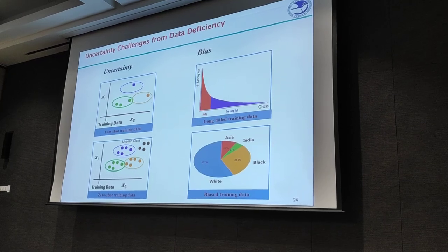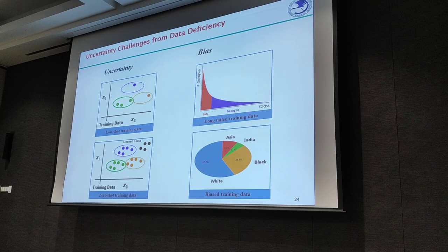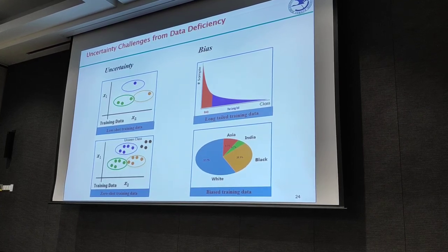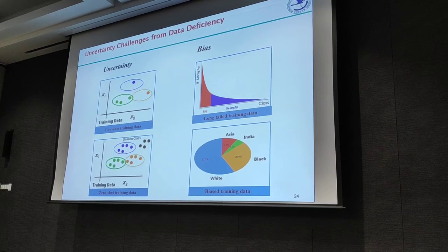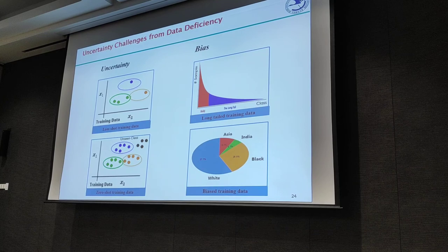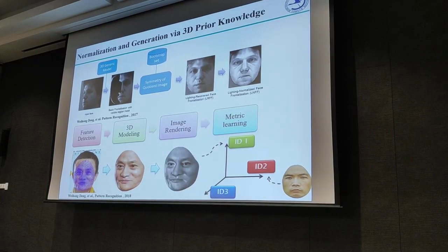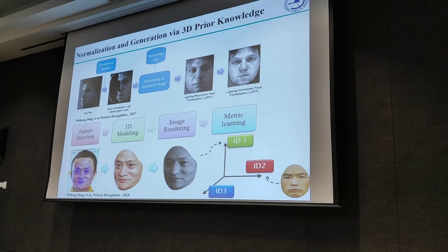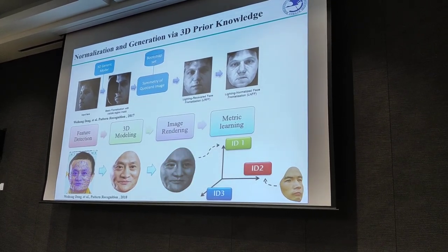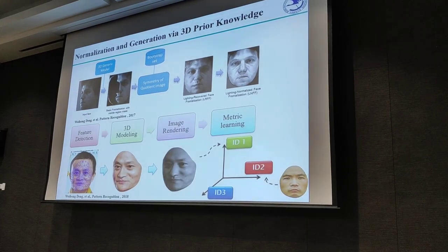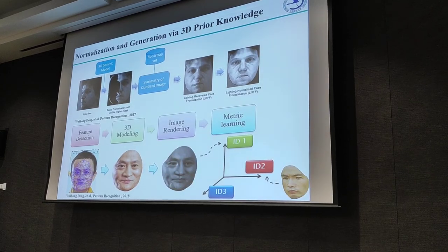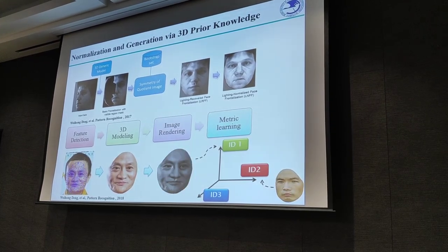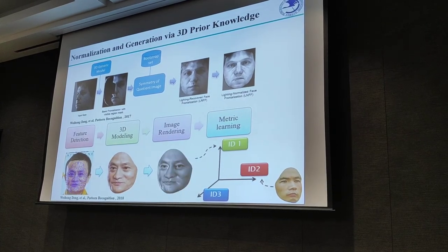In many facial recognition tasks, it is difficult to collect enough training images to model the uncertainty of faces needed by deep neural networks. So instead of focusing solely on learning from big data, my insight was to give the algorithm the ability to learn from low-shot, long-tailed, zero-shot, and biased training datasets. The most straightforward approach is to integrate prior knowledge, like a 3D shape model of the face, to generate virtual samples and enlarge the training set. We conducted work for both face and object recognition, and used additional metric learning to ensure the classifier fully exploits the virtual samples.